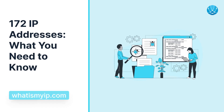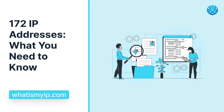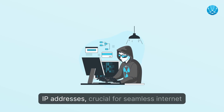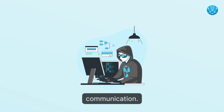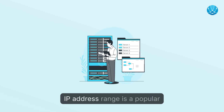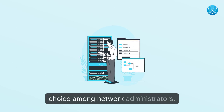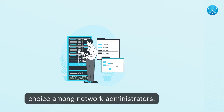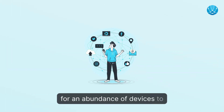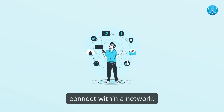172 IP addresses — what you need to know. Let's dive into the realm of IP addresses, crucial for seamless internet communication. Among the various ranges, the 172 IP address range is a popular choice among network administrators. This Class B IP range allows for an abundance of devices to connect within a network.